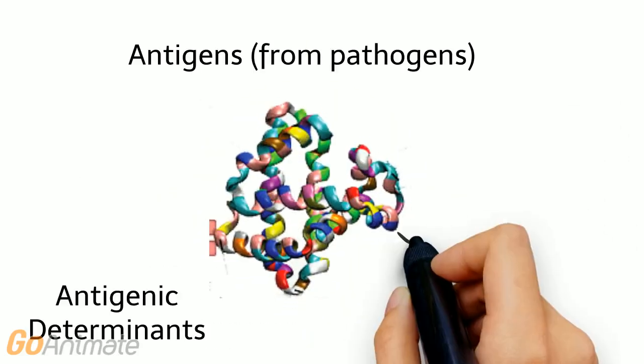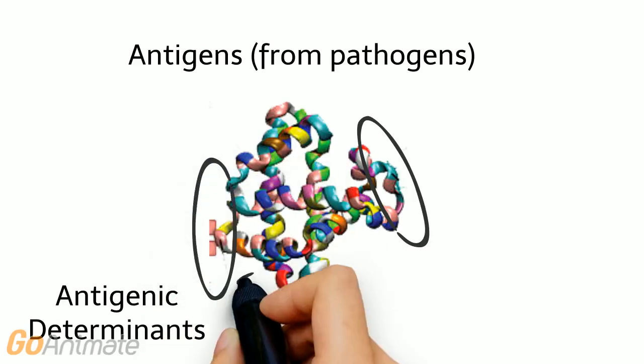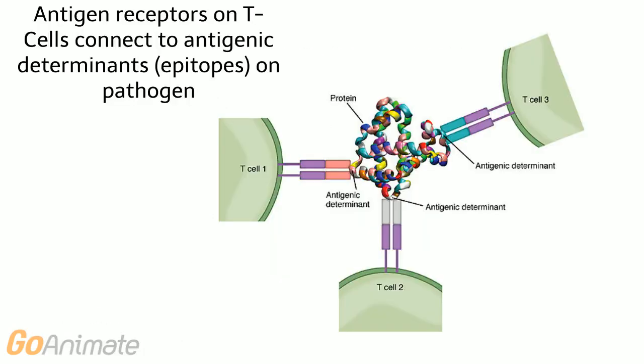T cells respond to antigens located on pathogens. Antigens contain regions called antigenic determinants that work to activate T cells. T cells can connect to these antigenic determinants, or epitopes.